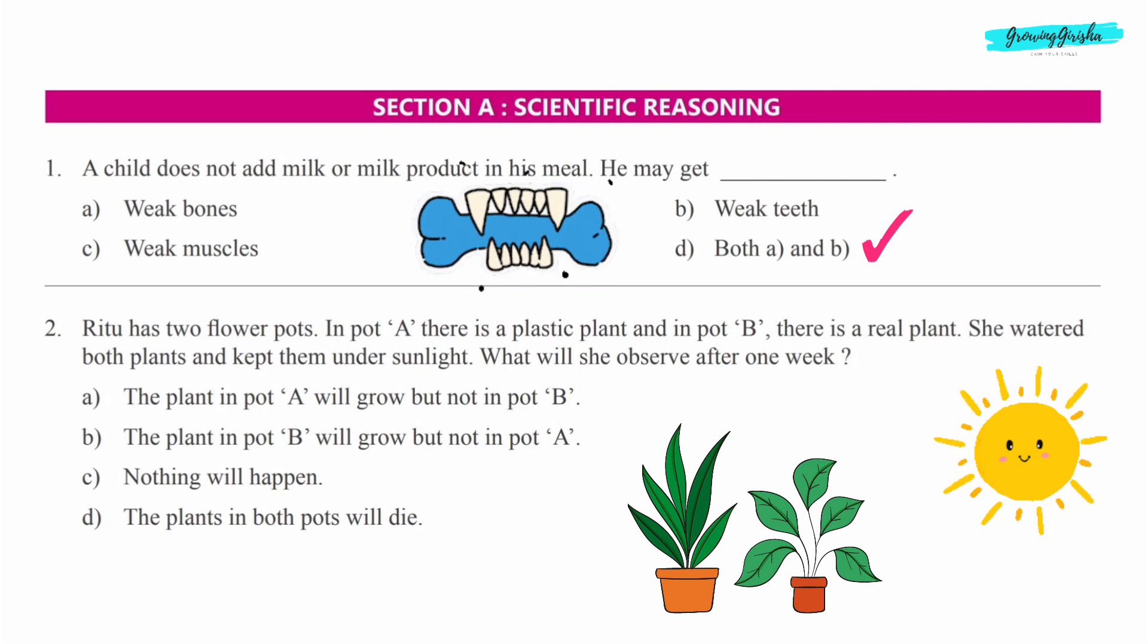a) The plant in pot A will grow but not in pot B. b) The plant in pot B will grow but not in pot A. c) Nothing will happen. d) Both the plants will die.